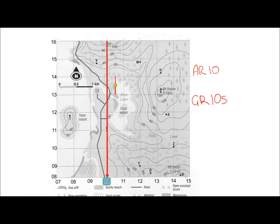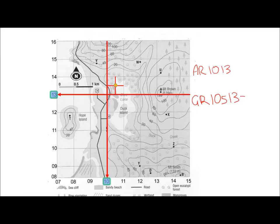Next we're going to go up the stairs, all the way up to 13 — see how it's the same as our area reference. Then in grid reference I write 13, and going up: 13.1, 2, 3, 4, 5 — so 13.5. The grid reference is 10 5, 13 5. And that's how it's 6 numbers.